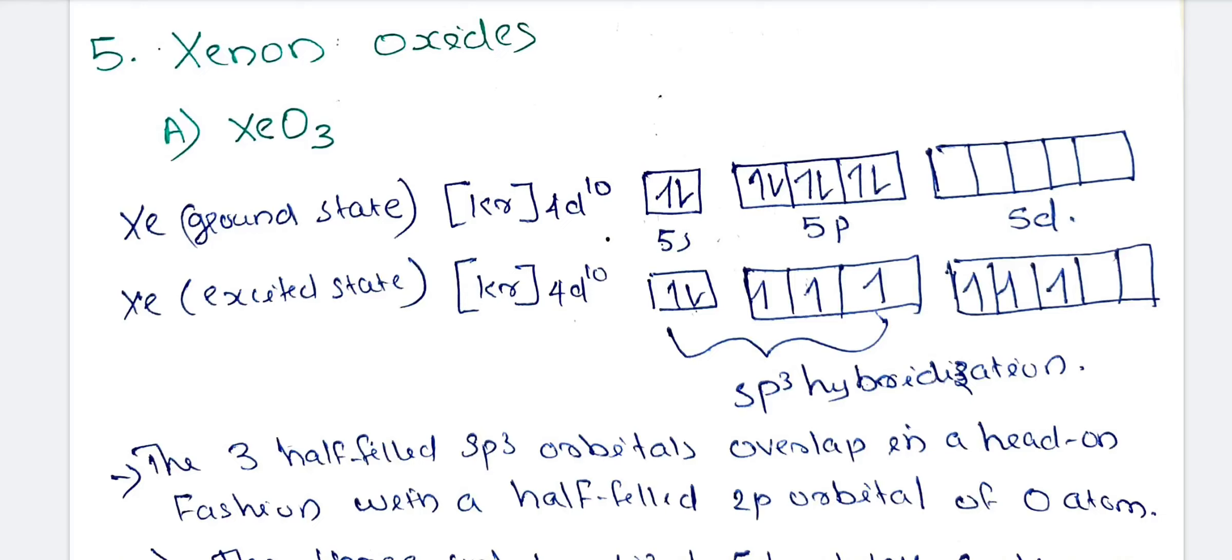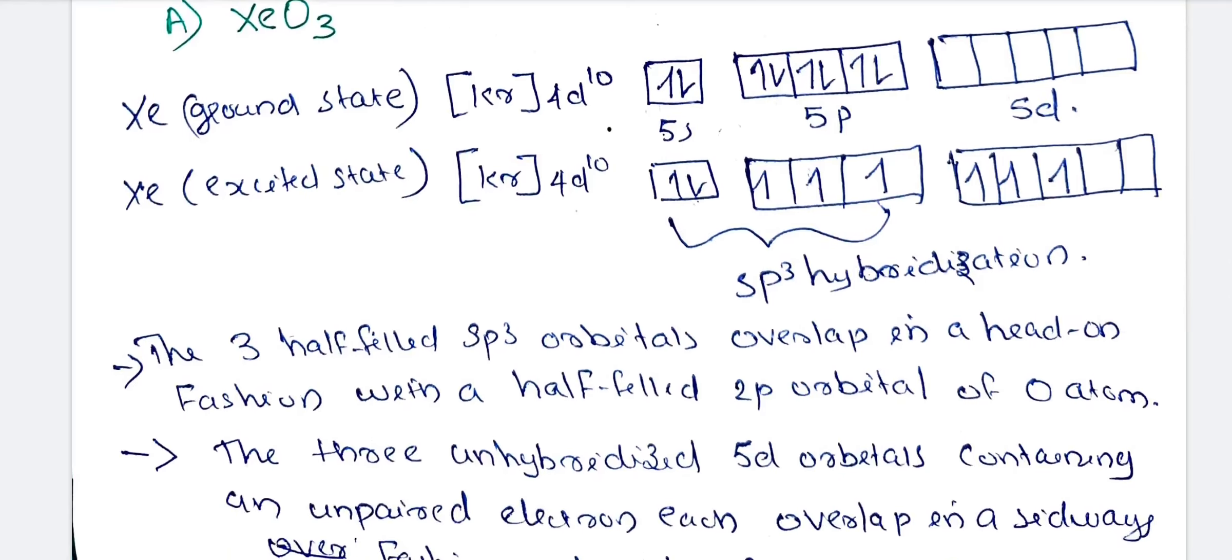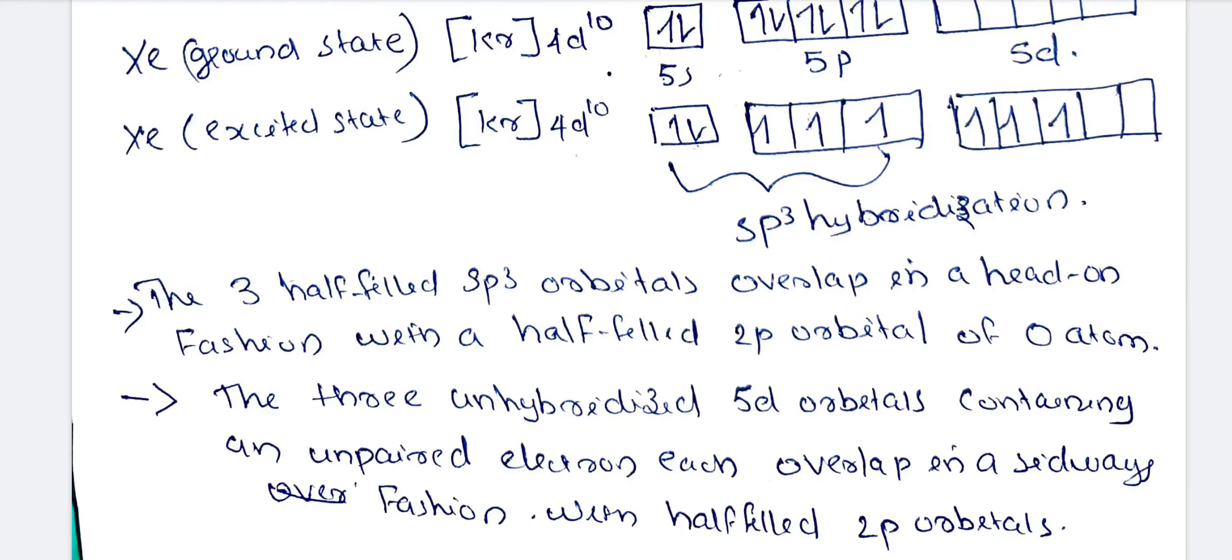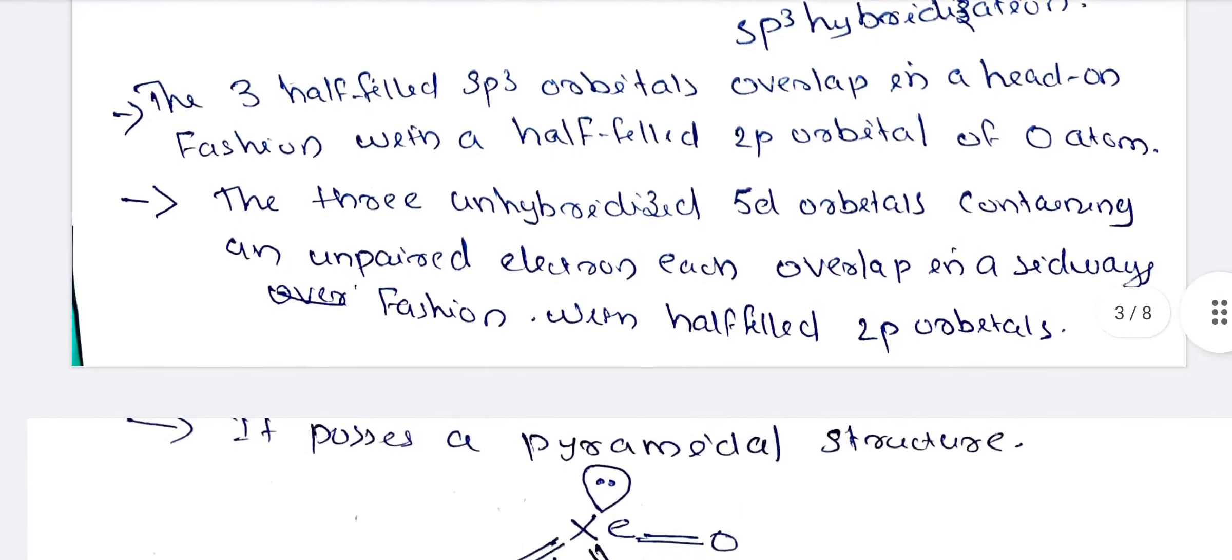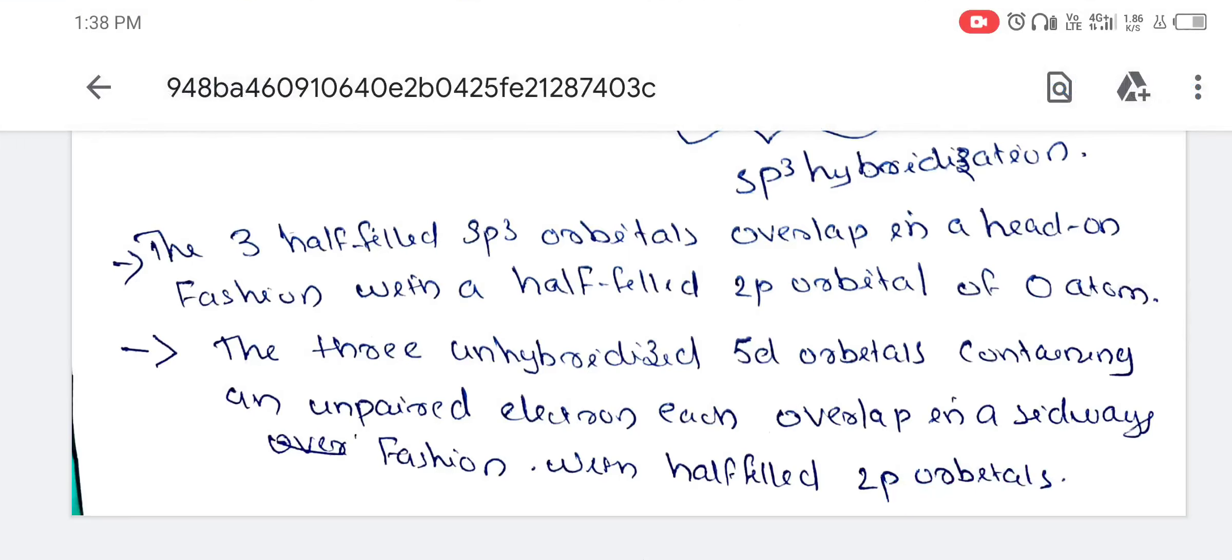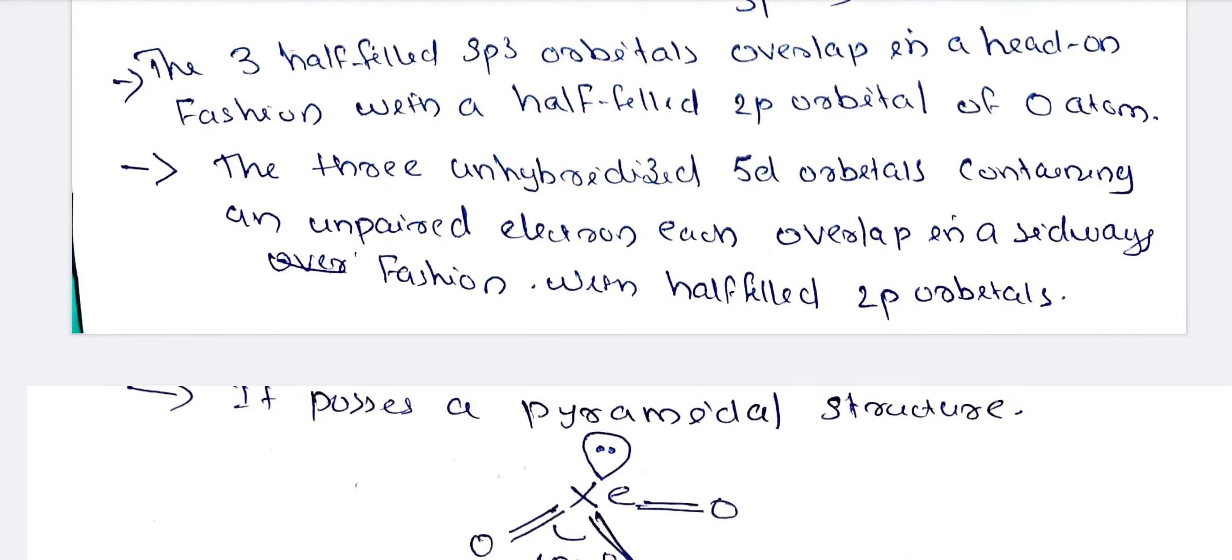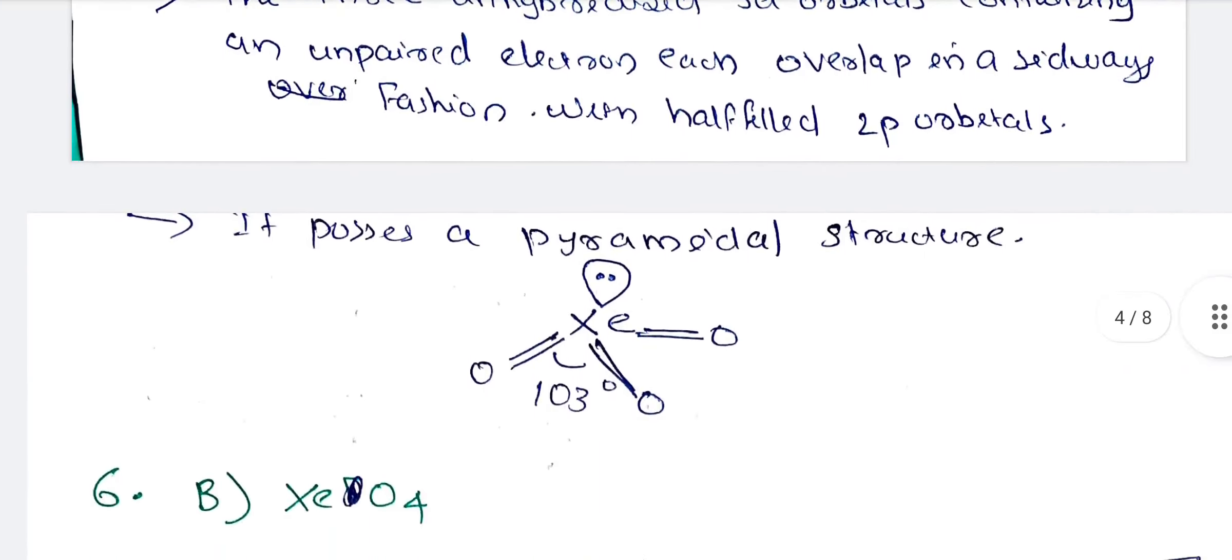We consider sp3 hybridization. If we consider 5s and 5p, we don't have to consider 5d. What is sp3 hybridization? There are 3 half-filled sp3 orbitals that overlap in head-on fashion with the 2p orbital of oxygen atom. The 3 unhybridized 5d orbitals containing unpaired electrons each overlap in side-ways fashion with the half-filled 2p orbitals.